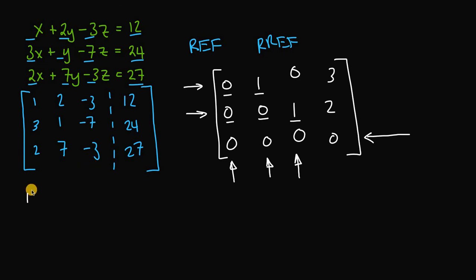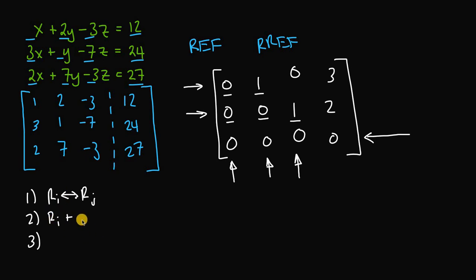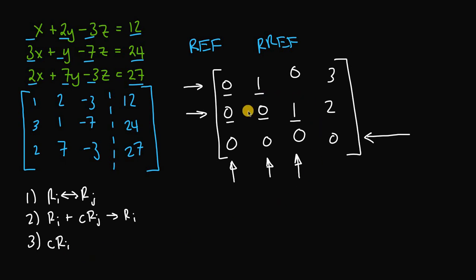We can now start performing elementary row operations to convert this augmented matrix into reduced row echelon form. We have three elementary row operations: first, we can interchange rows — switch any row with any other row. Second, we can take one row and add to it a multiple of another row to get our new row. Third, we can multiply a non-zero constant throughout every element of a row. These three rules yield matrices equivalent to the one before.